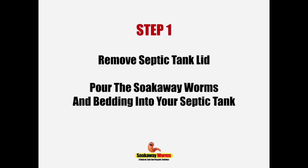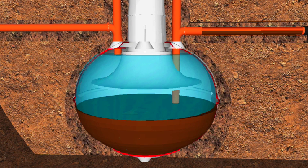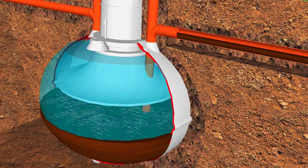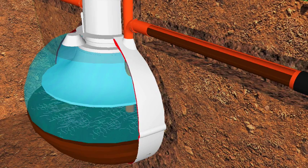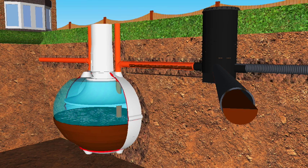Step one: remove the lid from the septic tank, pour the worms and the bedding all into the tank, and then replace the lid. The worms will fall to the bottom of the tank and very quickly adjust to their surroundings. They'll start burrowing into the sludge, making their way up through the outlet pipe towards the pipes that lead to the soak away. The worms will very quickly start breeding and multiplying, making their way through the sludge and through the pipes, penetrating your entire soak away pipe system.